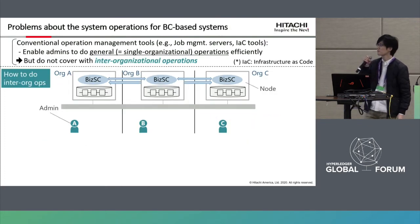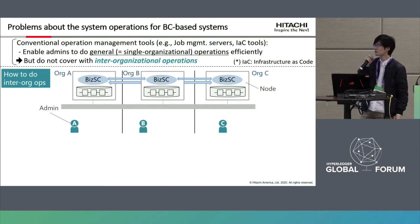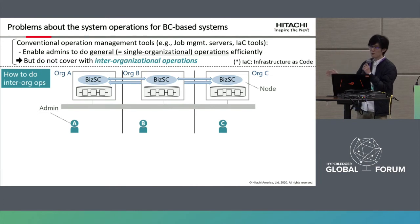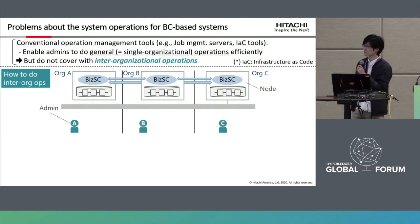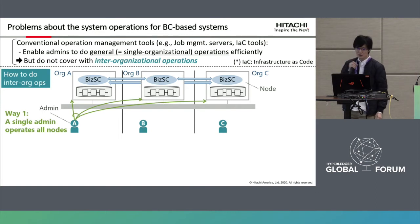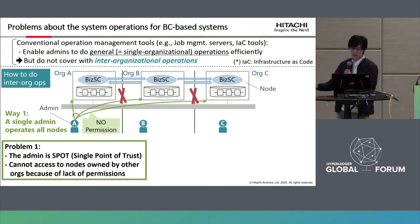Let me break down the problem. There are conventional operation management tools, like job management servers and IaC tools, that enable admins to do general operations efficiently. However, they do not cover inter-organizational operations, which are specialized for blockchain-based systems. One possible approach is a single admin operating all nodes, but this makes the admin a single point of trust in the blockchain network.